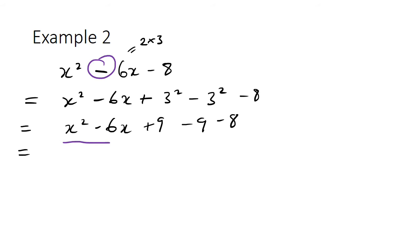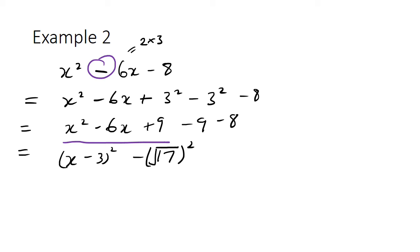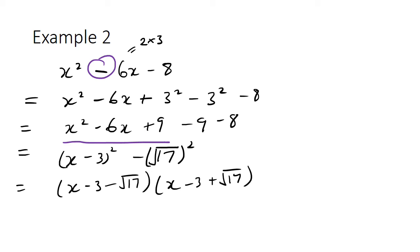The first three terms form a perfect square, which we write as (x-3)², and then minus 17. We write the negative 17 as (√17)², and now we've got a difference of squares, so we can write that as (x-3 - √17)(x-3 + √17). That's as far as we can factorize that particular example.